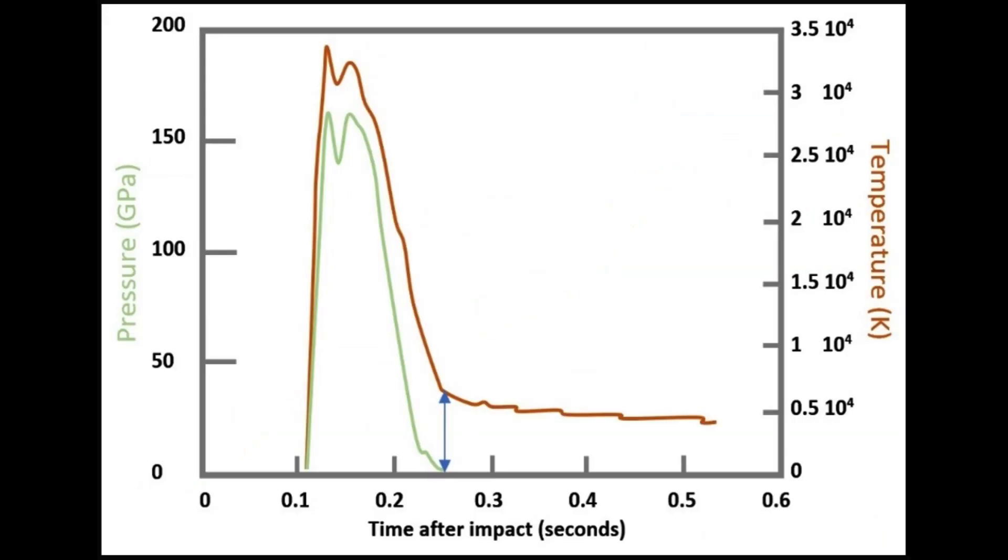Pressure releases within few tenths of a second, the temperature could reach 35,000 degrees Kelvin. Somewhere between 5,000 to 10,000 degrees Kelvin and 0.45 gigapascal, blue double arrow, the supercritical phase cools to the critical point where liquid and vapor separates, and conductive cooling of the liquid tektites can start. This transition may take place in less than 0.25 seconds.